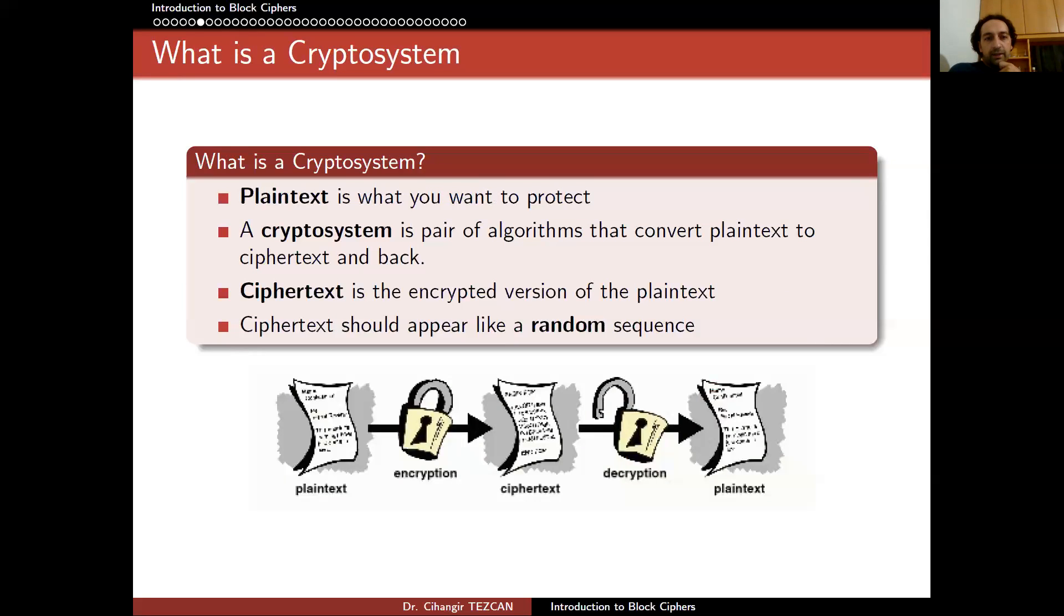So let's start with a few definitions. What is a cryptosystem? Plaintext is what you want to protect. And a cryptosystem is a pair of algorithms that convert plaintext to ciphertext and back. So ciphertext is the encrypted version of the plaintext. And ciphertext should appear like a random sequence. So here is the idea. You have the plaintext. This can be a file in your computer. This can be a message that you are sending via SMS or via WhatsApp.